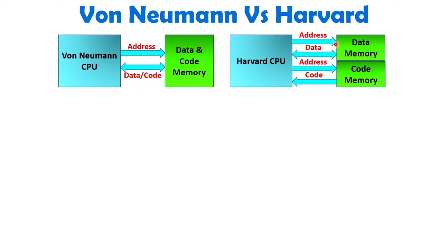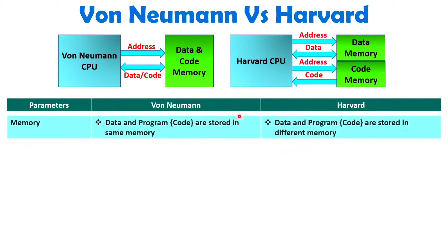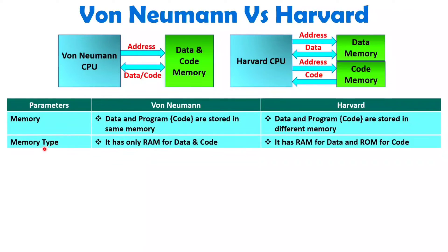Now there are a few essential things to understand through comparison. With respect to different parameters, I'll compare Von Neumann and Harvard architecture. For memory access: data and program are stored in the same memory with Von Neumann architecture, while with Harvard architecture, data and program are stored in different memories.